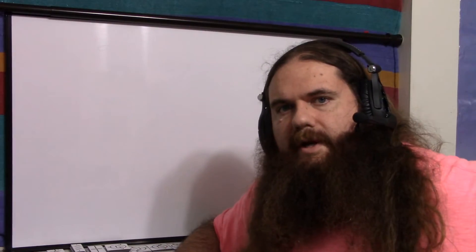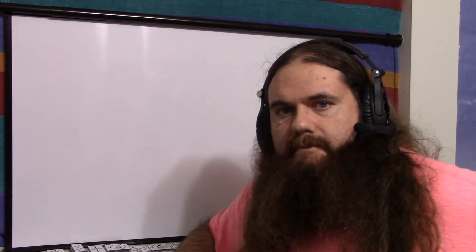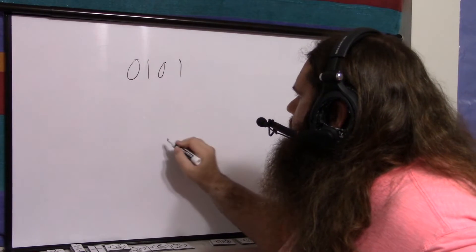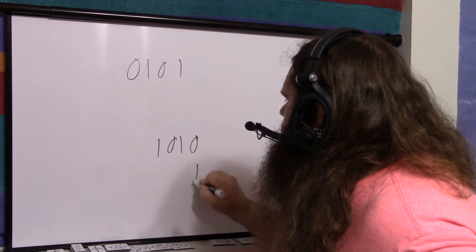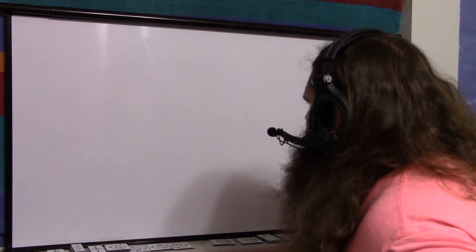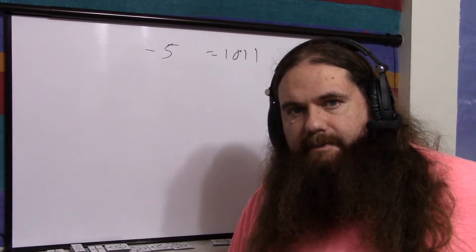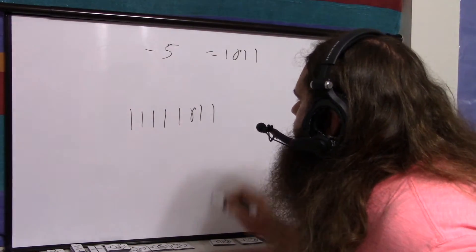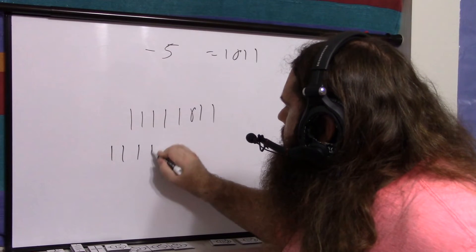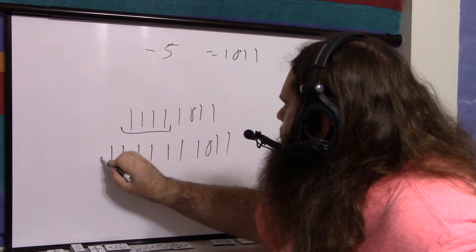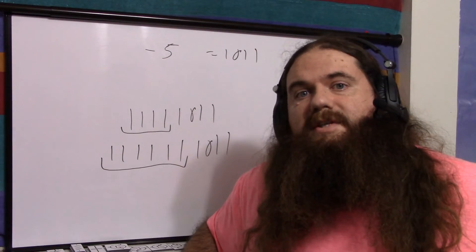The final thing to say is what happens if you need your number to be bigger. Let's say we have a 4-bit number and we want negative 5. Five is 0, 1, 0, 1, so negative 5 is 1, 0, 1, 1. That's if it's 4 bits big. What is it if it's 8 bits big? 1, 1, 1, 1, 1, 0, 1, 1. 10 bits? 1, 1, 1, 1, 1, 1, 1, 0, 1, 1. If you want to make a number bigger, you sign extend.